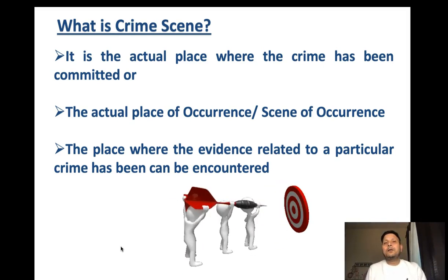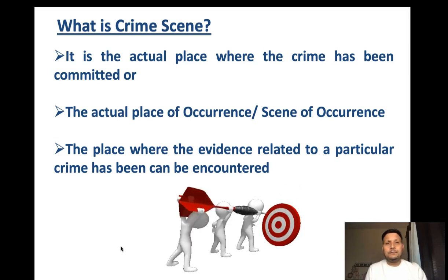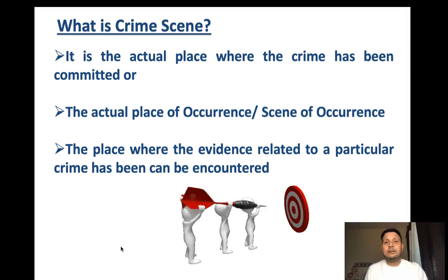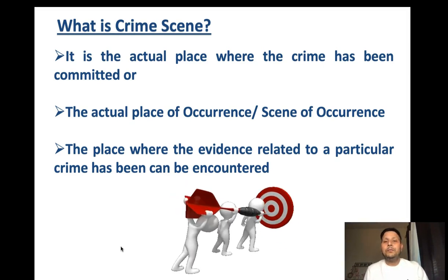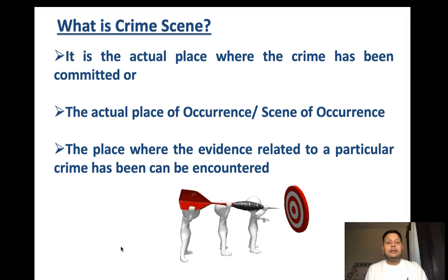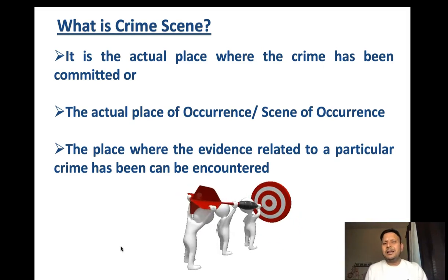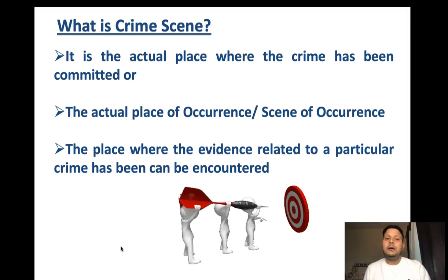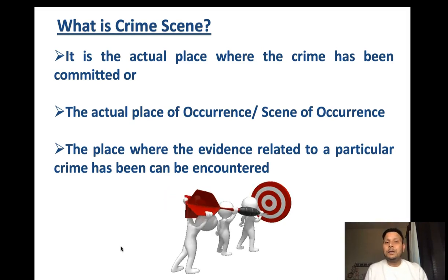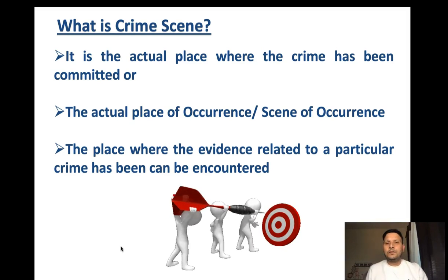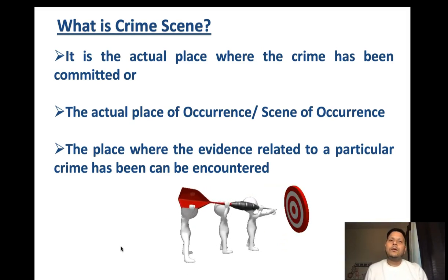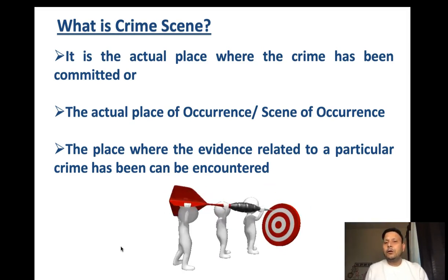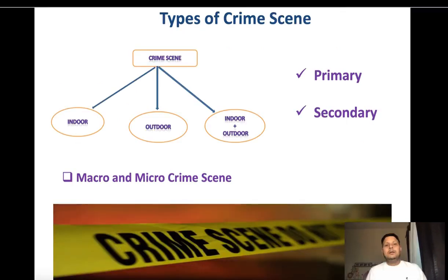The second definition: it is the actual place of occurrence, or scene of occurrence. With the help of witnesses, onlookers, and viewers who give their testimonies that this is the place where they saw the crime occurring. The third and most useful definition: it is the location where evidence pertaining to a particular crime has been encountered. We identify all parts of the corpus delicti based on major and minor evidences.